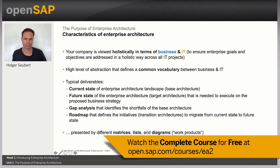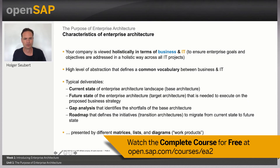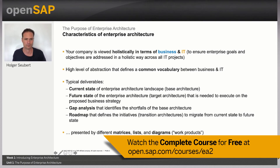The vocabulary you use comes in different so-called work products that you create when you define your architecture. These work products describe your architecture from different viewpoints that can be easily understood by both business and IT. Typical categories of work products are diagrams — visual representations — as well as lists and catalogs. We will see more concrete examples of those work products in later units.